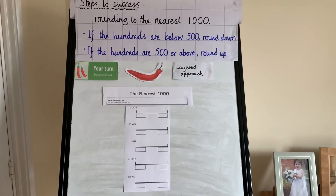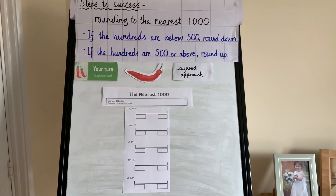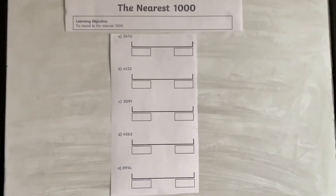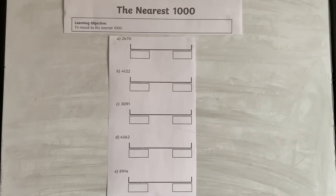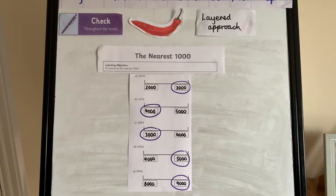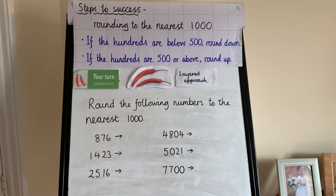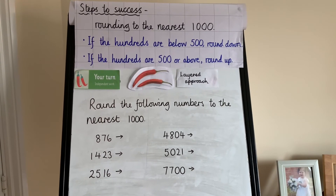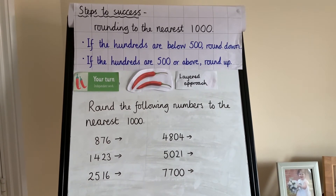Now it's your turn. Have a go at chilli 1 and see if you can round the numbers to the nearest 1,000. Pause the video and then come back to check the answers. Now it's time for chilli 2 — round the following numbers to the nearest 1,000. Jot them down, then come back to check the answers.